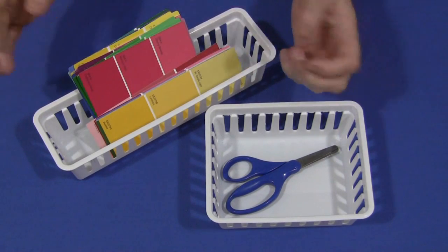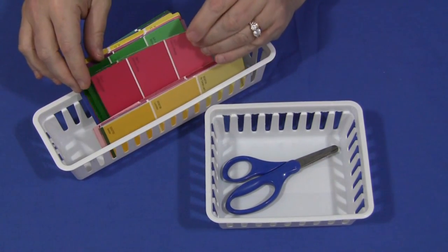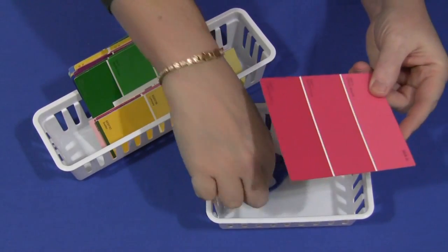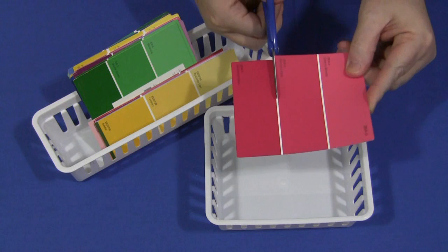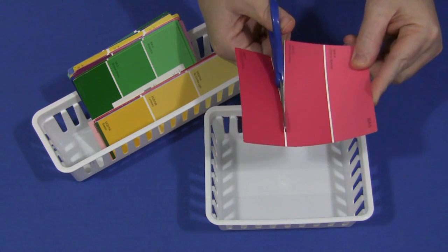Basically, all they do is they choose one that they want to do. We'll just choose this one, and they take their scissors and they cut along the white line in between the different colors of the paint samples on the card.